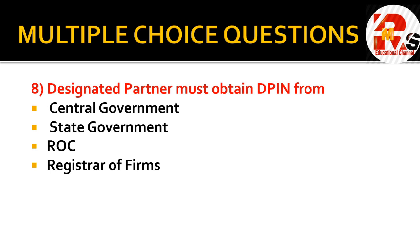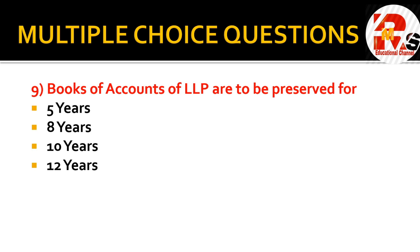The next question is very important and can also be asked as a short note — it's about designated partners. Designated partners in an LLP are like directors of a company. Designated partners must obtain a DPIN — Designated Partner Identification Number, similar to a Director Identification Number. From whom must they obtain it? The options are central government, state government, ROC (Registrar of Companies), or Registrar of Firms. The correct answer is central government.